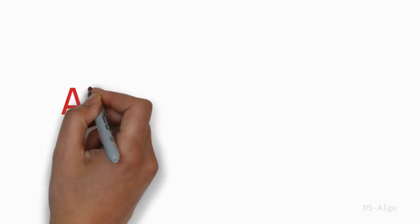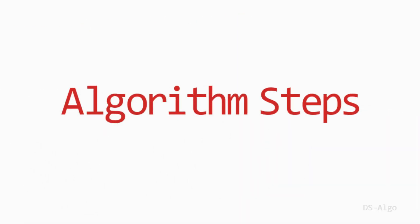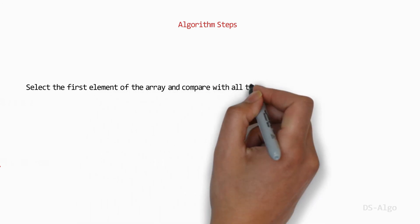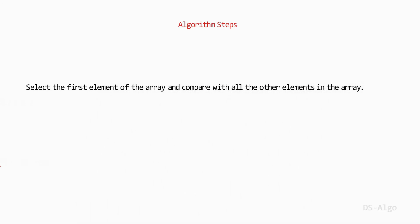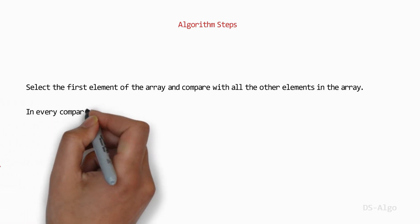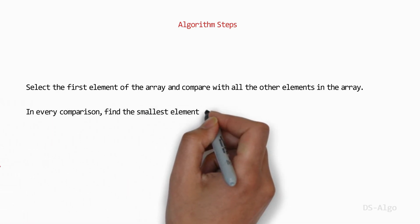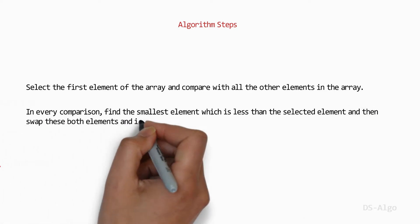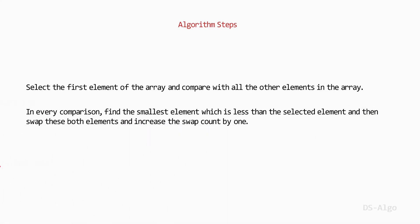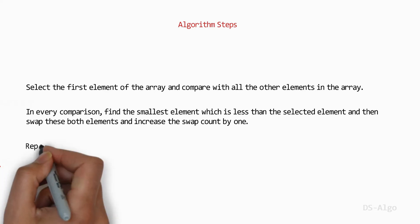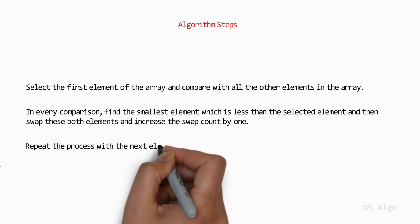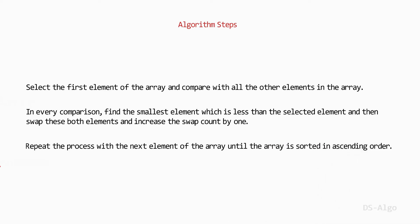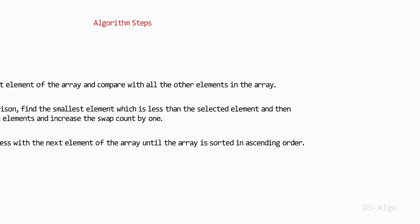Let's look at the algorithm steps. Select the first element of the array and compare it with all the other elements. In every comparison, find the smallest element which is less than the selected element, then swap those two elements and increase the swap count by one. Repeat this process with the next element of the array until the array is sorted in ascending order.